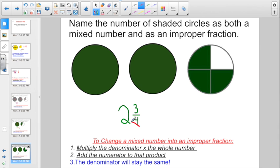Go and multiply the denominator times the whole number. 4 times 2. That's 8. Plus, add whatever numerator there is. 8 plus 3 more. That's going to give us 11. And the denominator is going to stay the same. So I have 11 fourths named as an improper fraction.